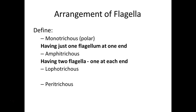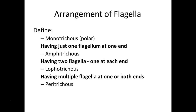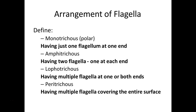Lophotrichous — trichous refers to hair-like — is having a clustering of two or more flagella at one end or both ends. Mostly it means multiple flagella at a particular pole or end. Since it tends to be at the end, when they have a single flagella it's sometimes referred to as polar — at the pole of the organism. Peritrichous is my favorite: multiple flagella covering the entire surface of the bacteria.